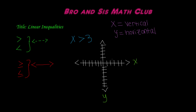So let's go ahead and plot 3. Now we already know that our line is going to be vertical, but is it going to be dashed or is it going to be solid? Well, since the symbol is greater than, it's going to be a dashed line. So we're going to make a dashed line vertically down through the point. This is what our line is going to look like.